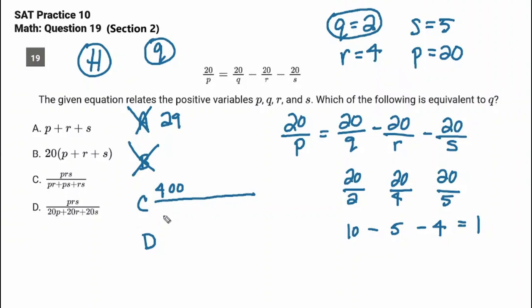P times R, 20 times R, so that's 80. Plus P times S, 20 times 5, which is 100. Plus R times S, 4 times 5, which is 20. Do it on your calculator if you want. 80 plus 100 is 180. Plus 20 is 200.